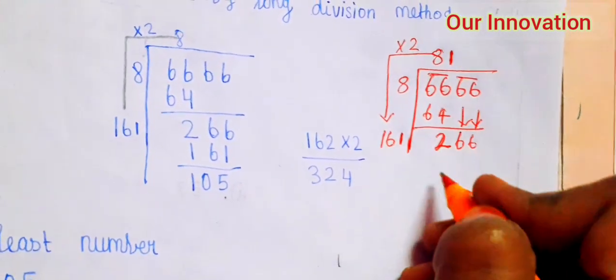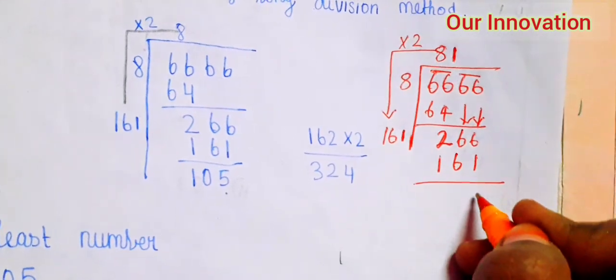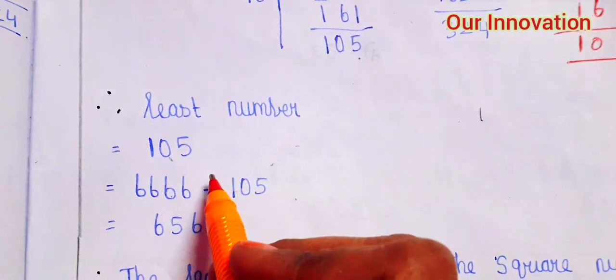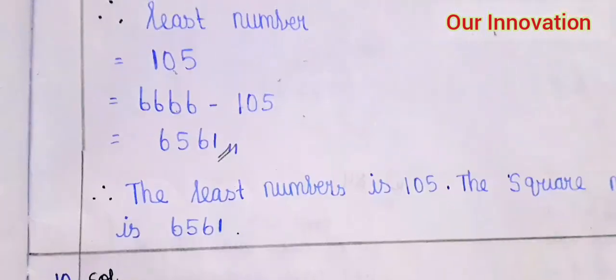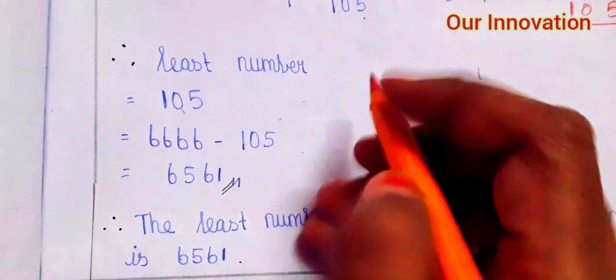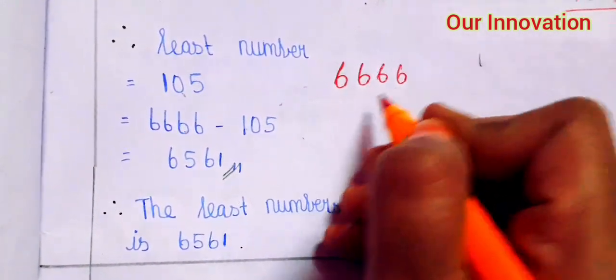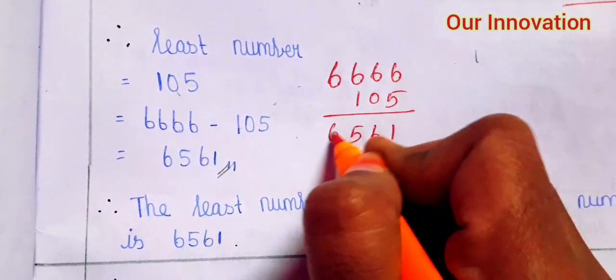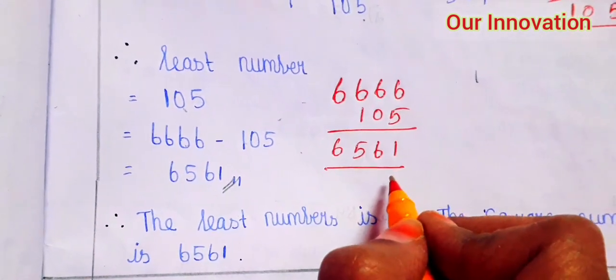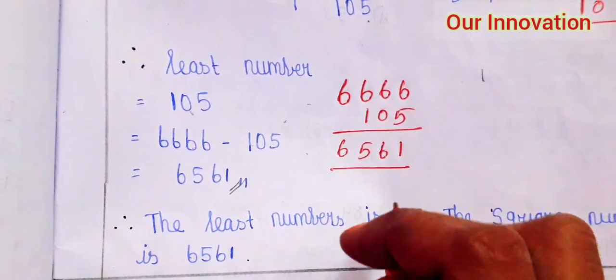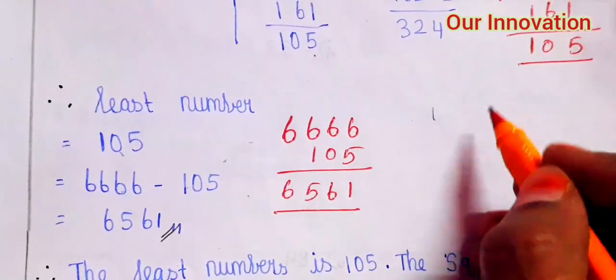161 into 1 is 161, so subtract. 501 minus 161 gives remainder 105. So the least number is 105. Therefore, subtract 6666 minus 105.